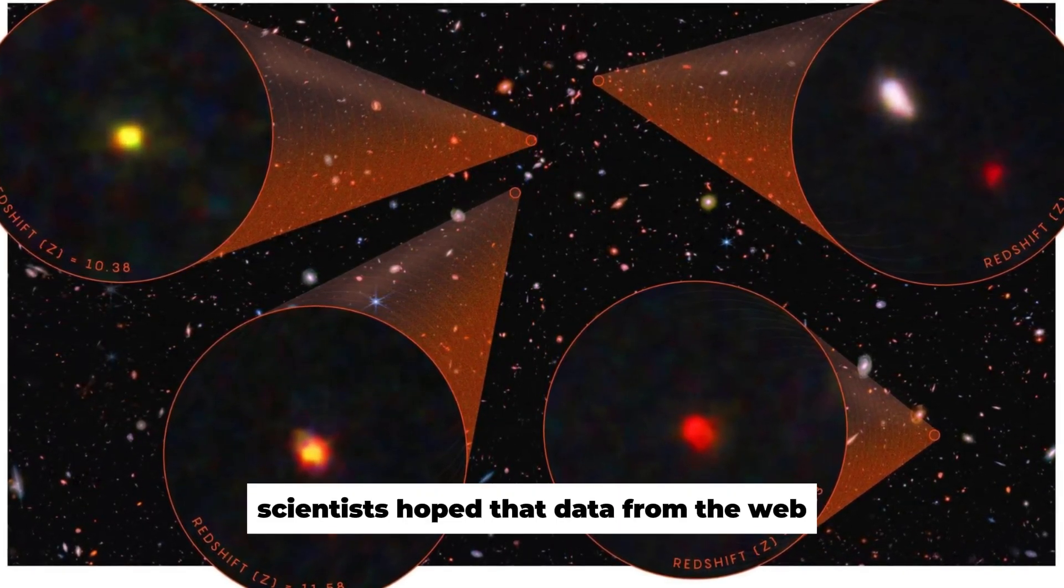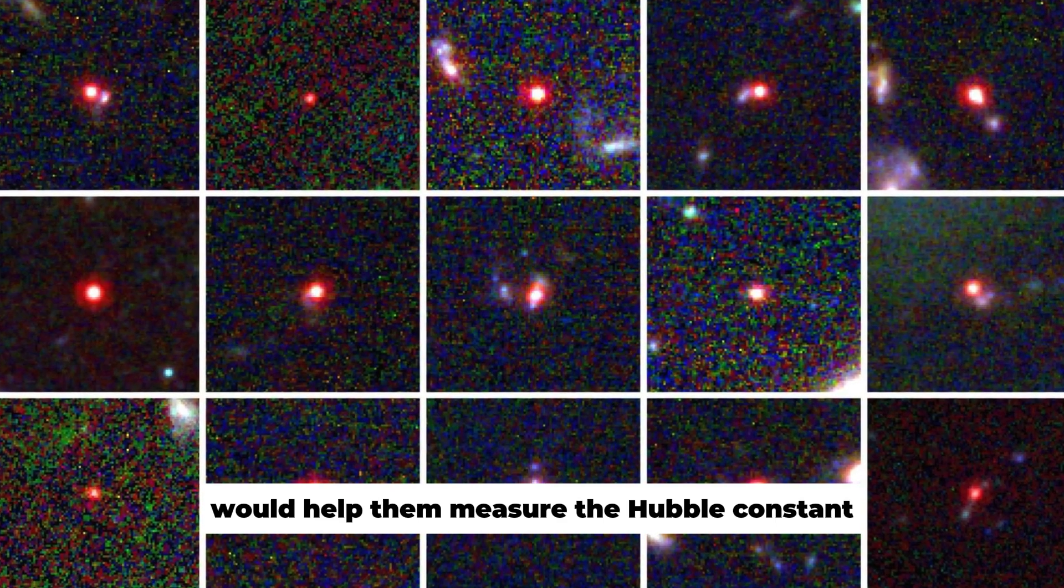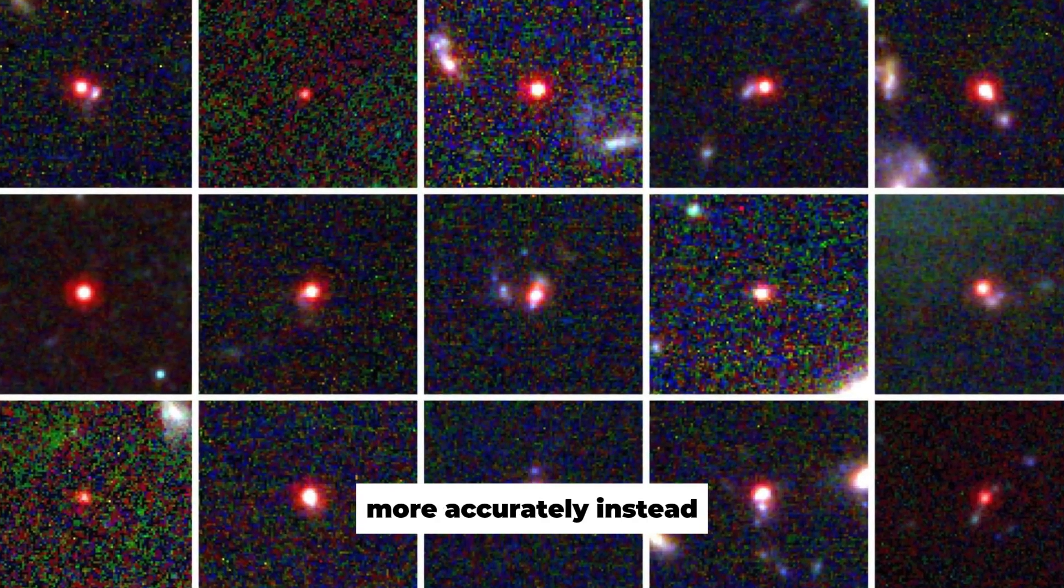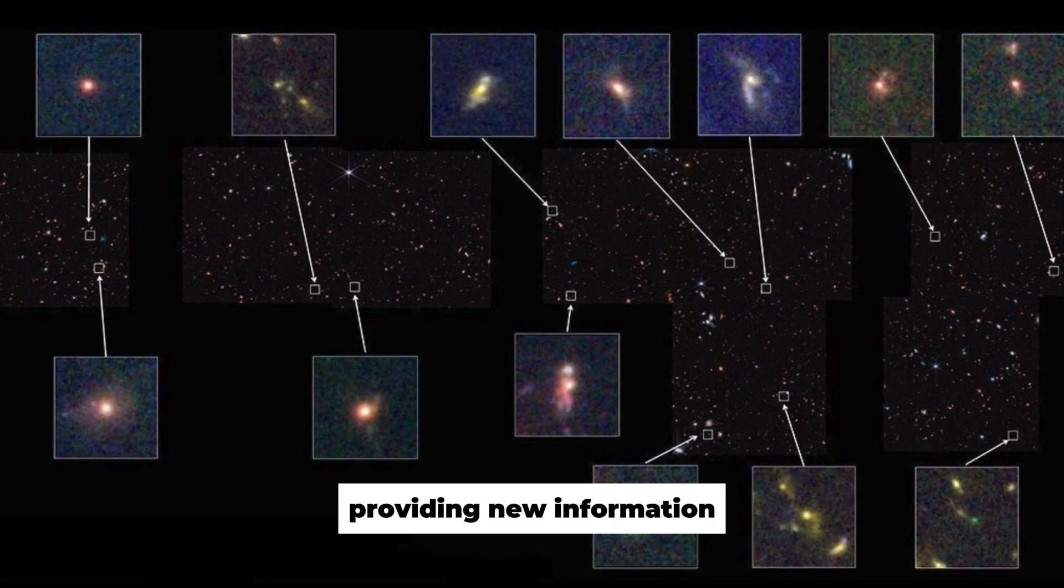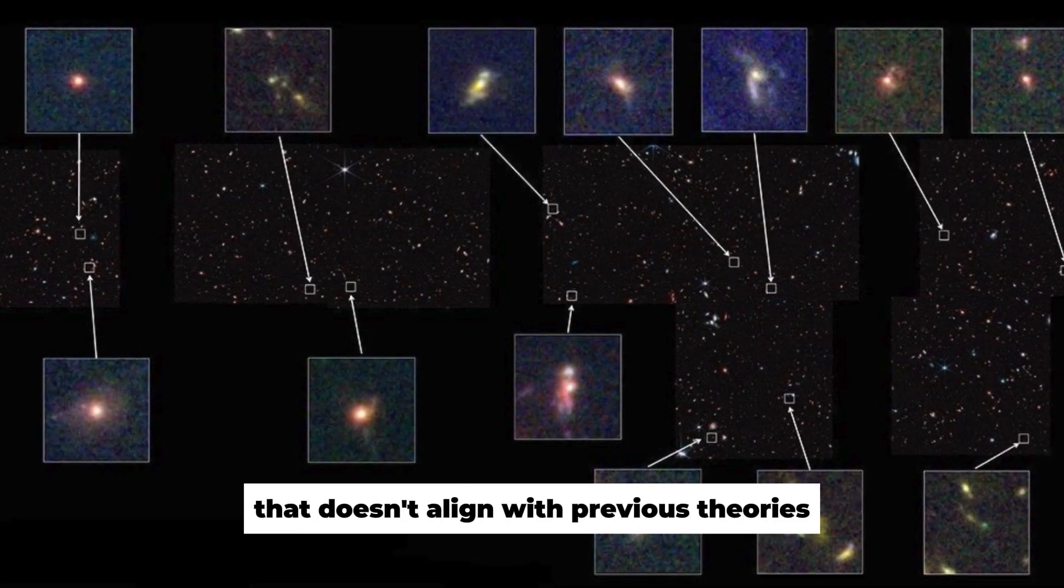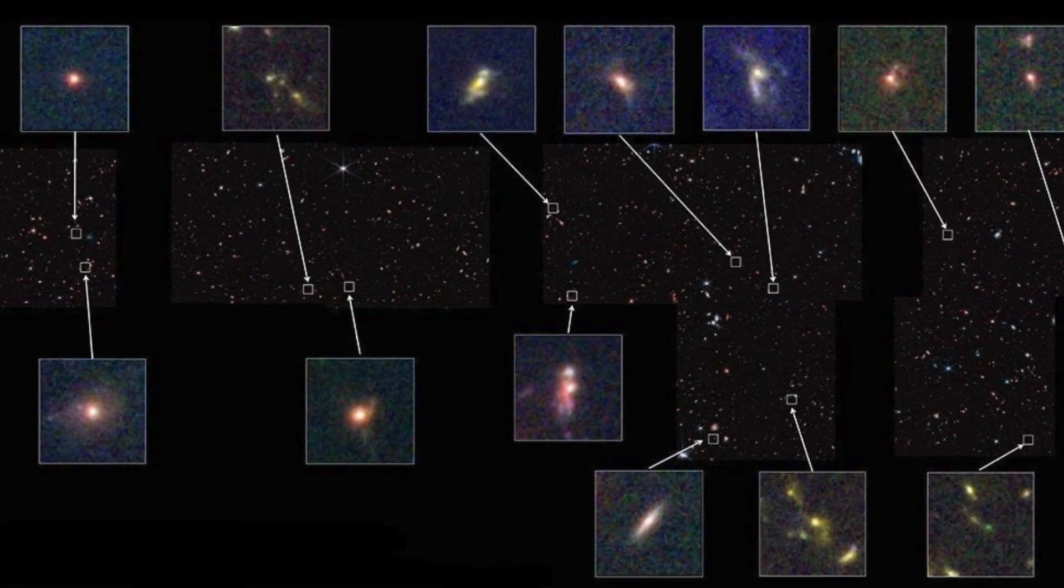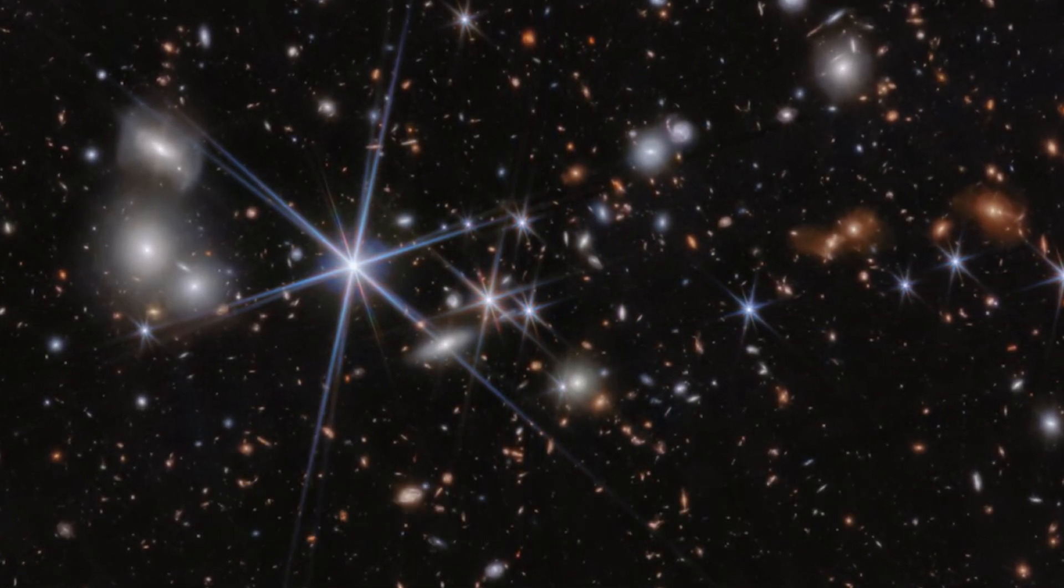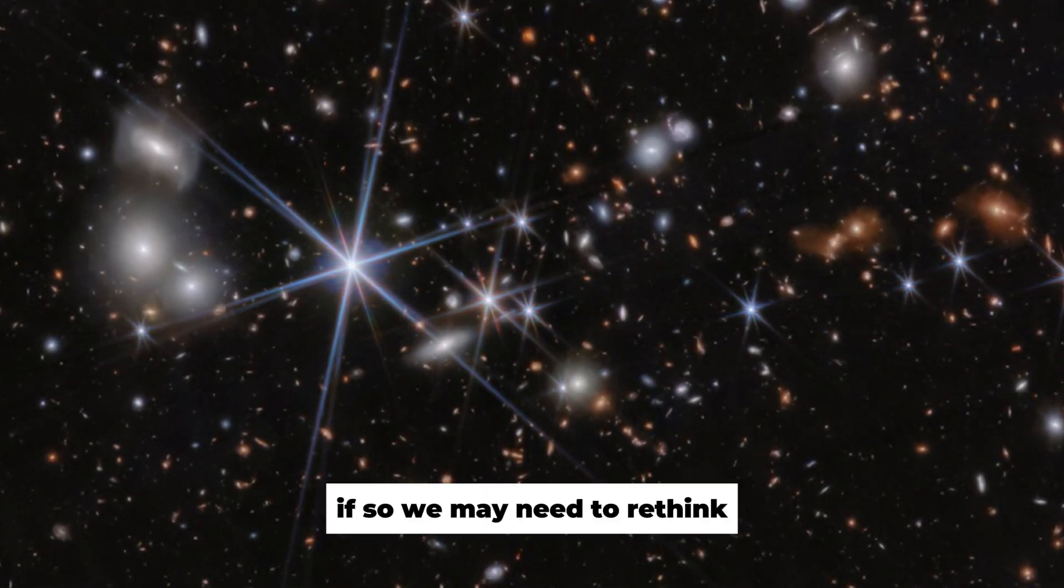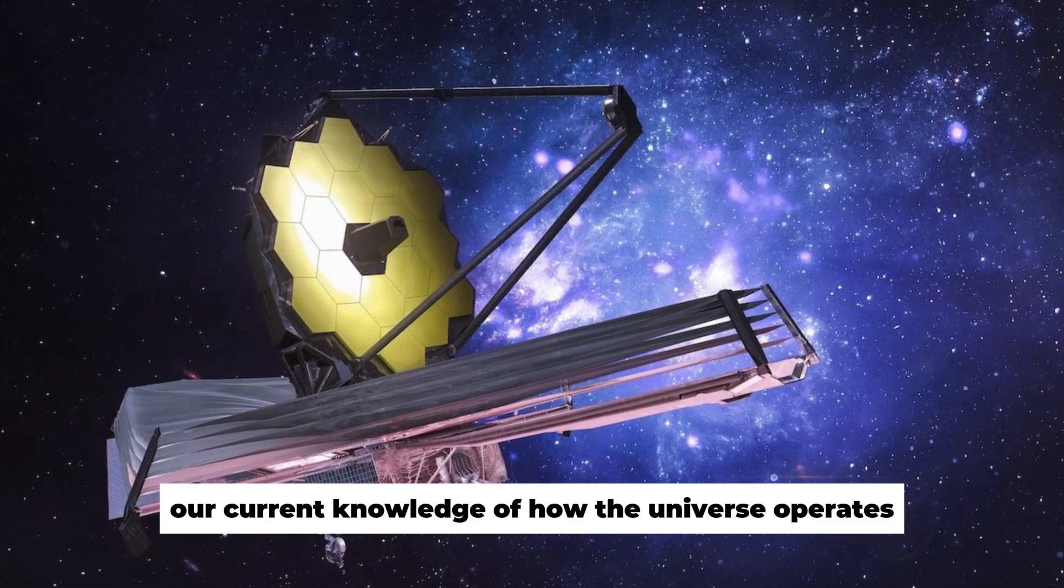Scientists hoped that data from the Webb would help them measure the Hubble constant more accurately. Instead, the first wave of data has complicated matters, providing new information that doesn't align with previous theories. Could this information help us develop a new understanding of space? If so, we may need to rethink our current knowledge of how the universe operates.